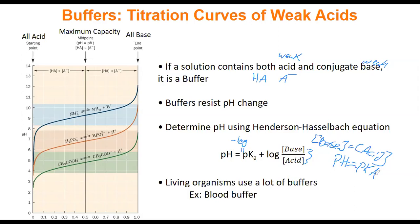A buffer only works plus one or minus one of its pKa. So let's say we have a buffer and its pKa is 4.5. That buffer is only good from a pH range of 3.5 to 5.5. If you go below or above that range, it's not going to work as a buffer — you're not going to stop any pH change. That's what's happening when you see these curves just go wild. You ran out of buffer.